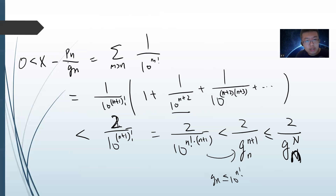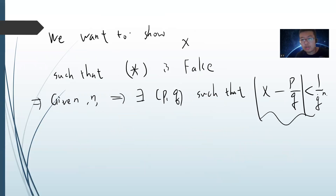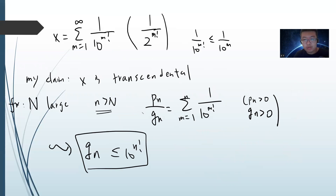What this means is that |x - P_n/Q_n| can always be made less than 2/Q_n^N, and capital N can be arbitrarily large. So this violates the Liouville bound. Given any N, I can construct P_n/Q_n — just the partial sum of the first n terms — such that this inequality holds.